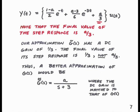Looking back at the step response, y(t) = [(1 − a)/2]e^(−t) + [(a − 3)/6]e^(−3t) + (a/3) · u(t). With time, the first two terms die out due to exponential decay, leaving just the third term, a/3. So the final value of the step response is a/3. The approximation G̃ has a DC gain of 1/3, so the final value of its step response is 1/3, not a/3. This suggests a way to get a better approximation.